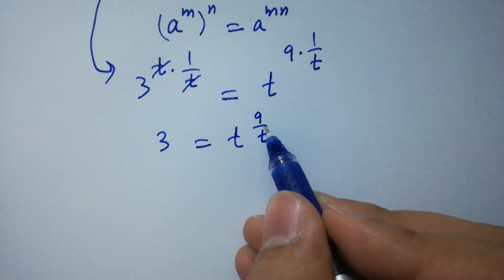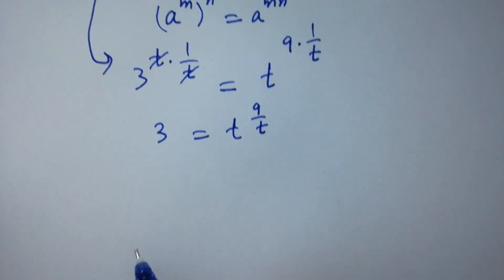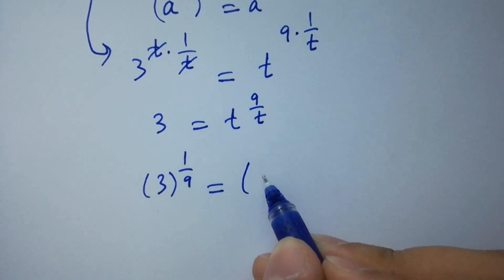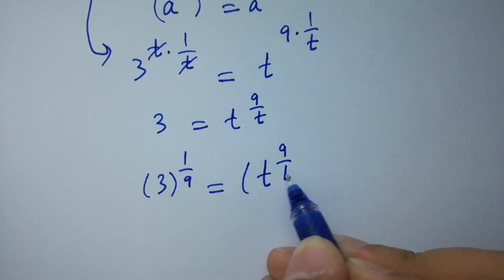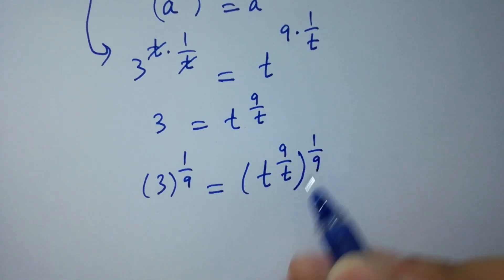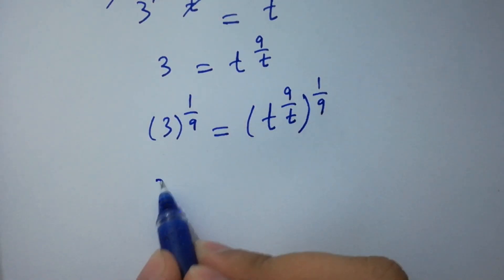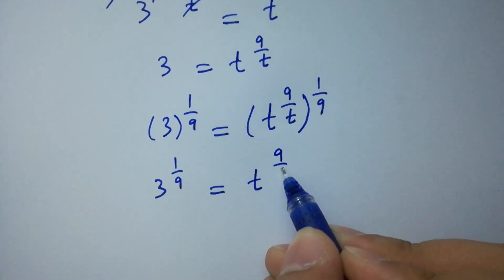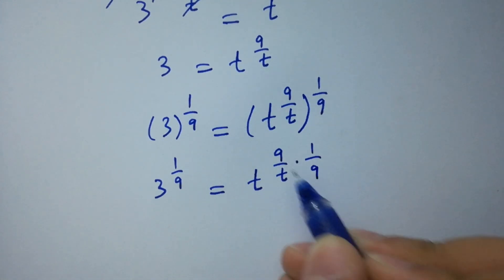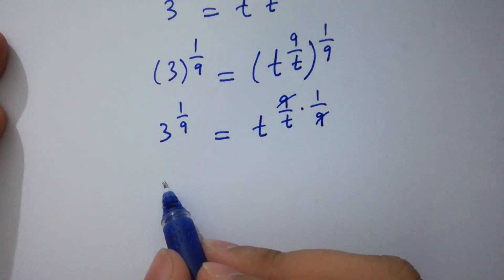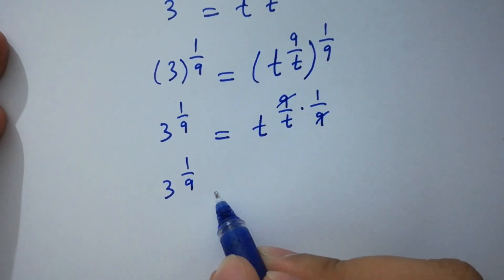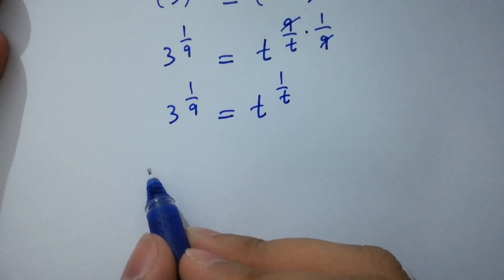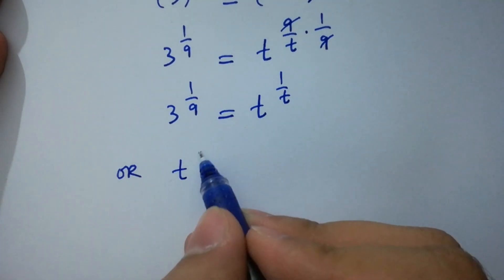To cancel the 9, take power 1 over 9 on both sides. So 3 to the power 1 over 9 equals t to the power 9 over t, raised to the power 1 over 9. This gives 3 to the power 1 over 9 equals t to the power 9 over t times 1 over 9, and the 9 and 9 cancel. We have 3 to the power 1 over 9 equals t to the power 1 over t.